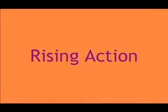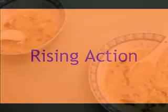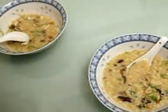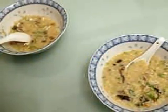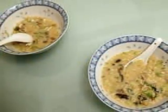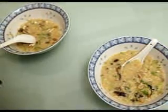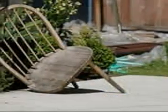The rising action is where drama begins to occur. These problems lead to the climax. This is where Goldilocks sees the three bowls of porridge on the table. She tries them all, but Baby Bear's is the best, so she eats it all up. She then sees the chairs. She tries sitting in all of them, but Baby Bear's was the best, so she sits in that one and breaks it.